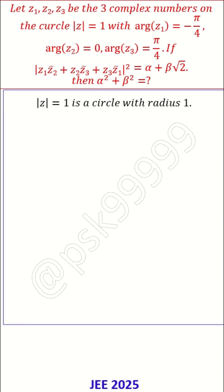So first thing is this is the circle with radius 1, correct because it is nothing but x square plus y square equal to 1. So z1, z2 and z3 can be written as z1 equal to e to the power of minus pi by 4 i.